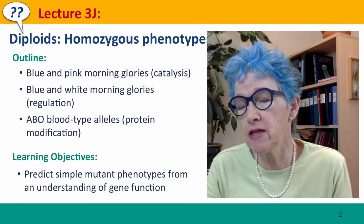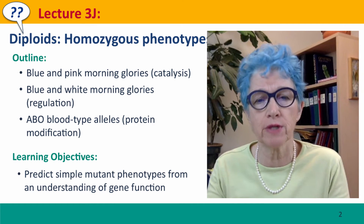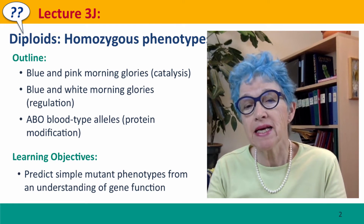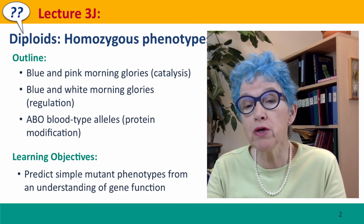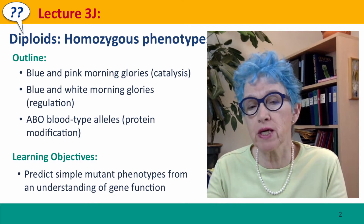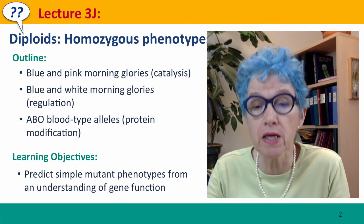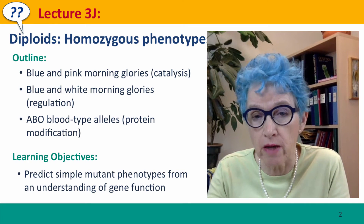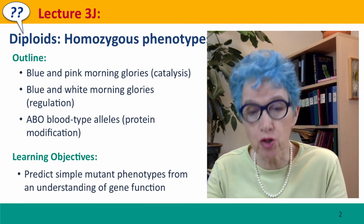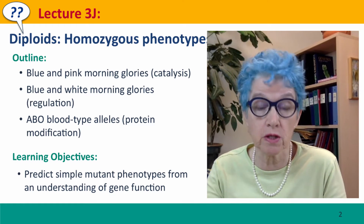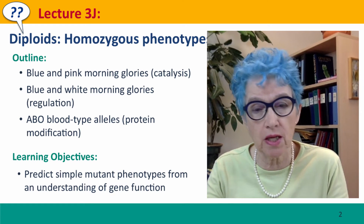So until now in this module, we've been thinking about what proteins are and what proteins do. And in this and the subsequent lectures in the rest of this module, we're going to move forward to connecting what proteins do to ultimately organismal phenotypes, with the genotypes that underlie these. In this lecture, we're starting with thinking about homozygous phenotypes in diploid organisms, and we'll continue this in the next lecture.